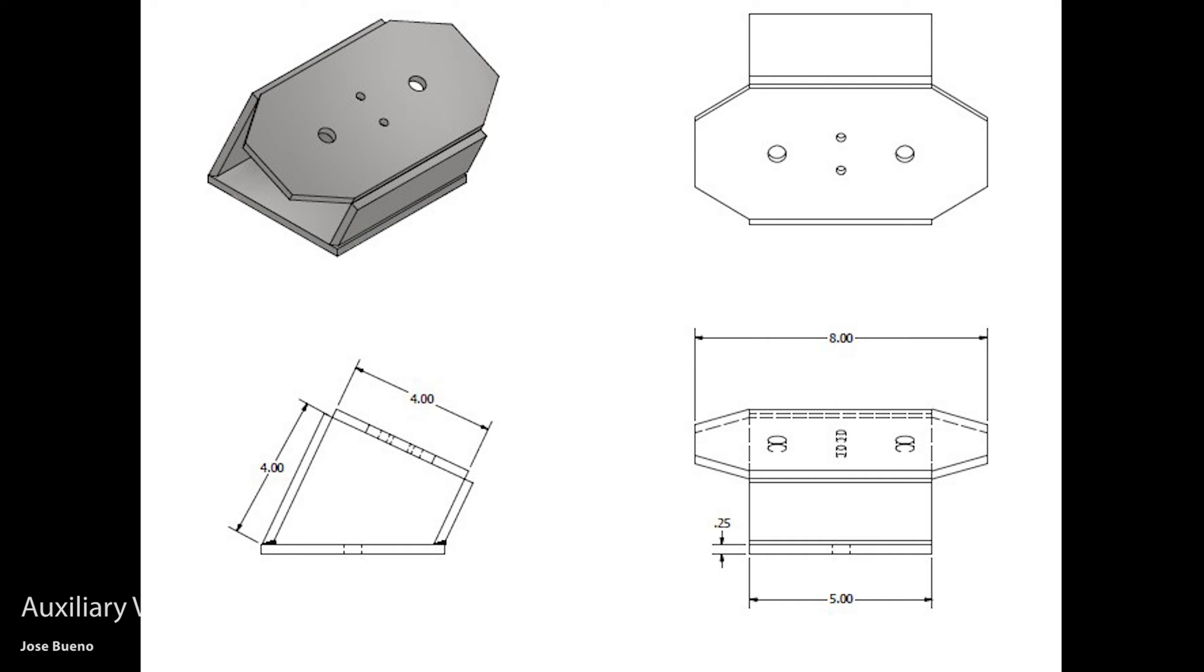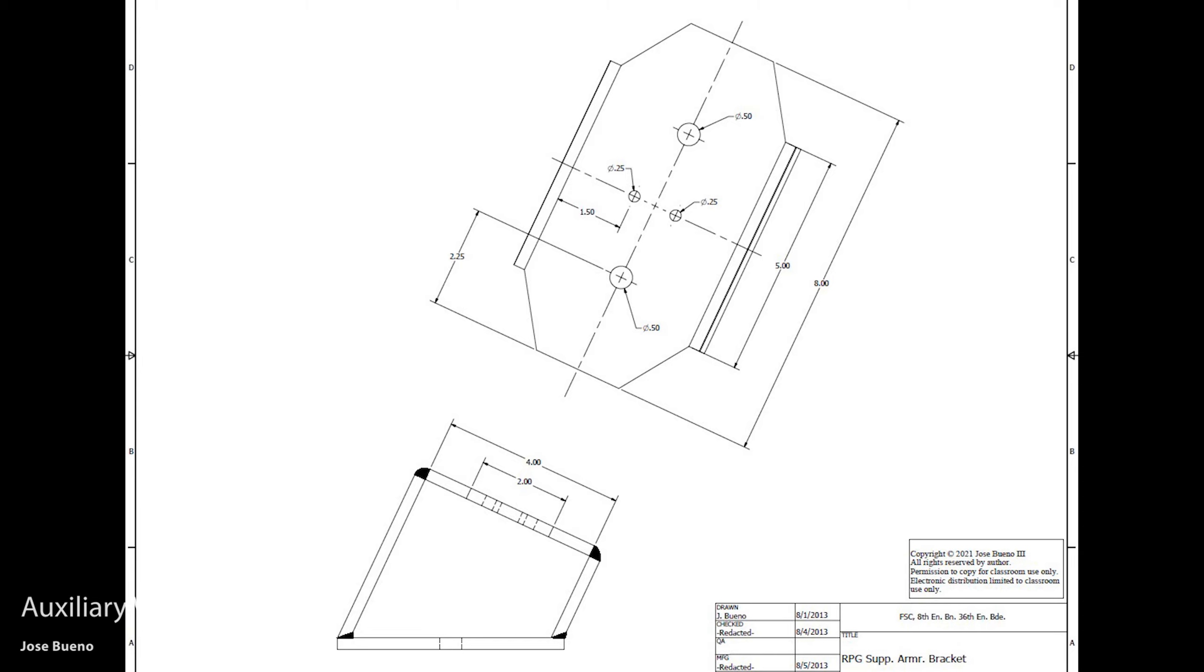And that's why I've not included them here. But what we can do is create an auxiliary view, which is just going to give you another point of view from a different angle. So that way you can look at that surface or you can look at that side that's at an angle head on. And then here I can give you all the information that you need to know in order to cut or drill these four holes into the face of the bracket.